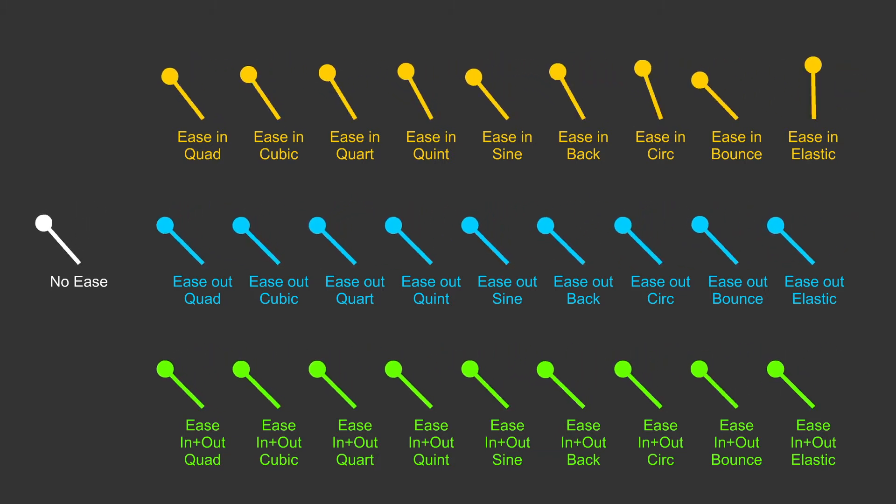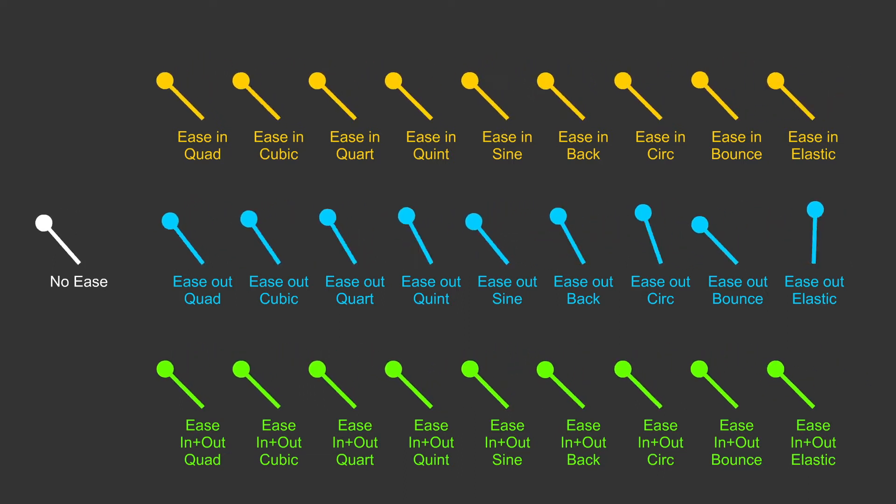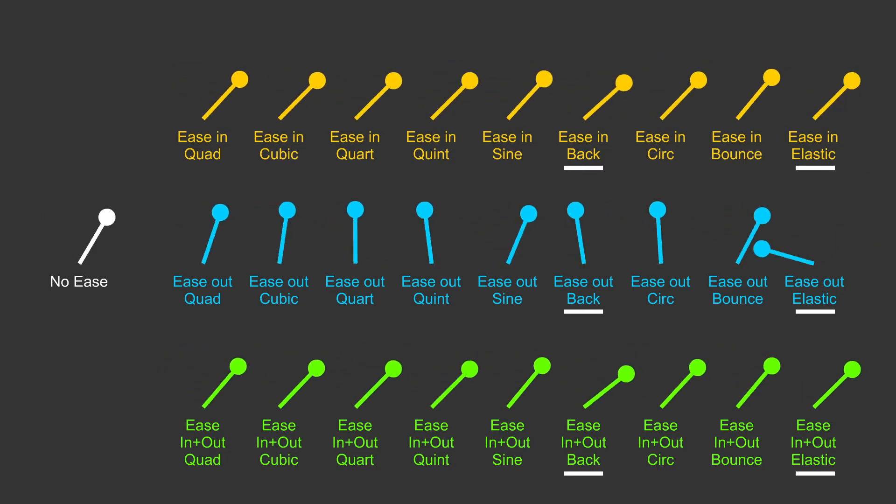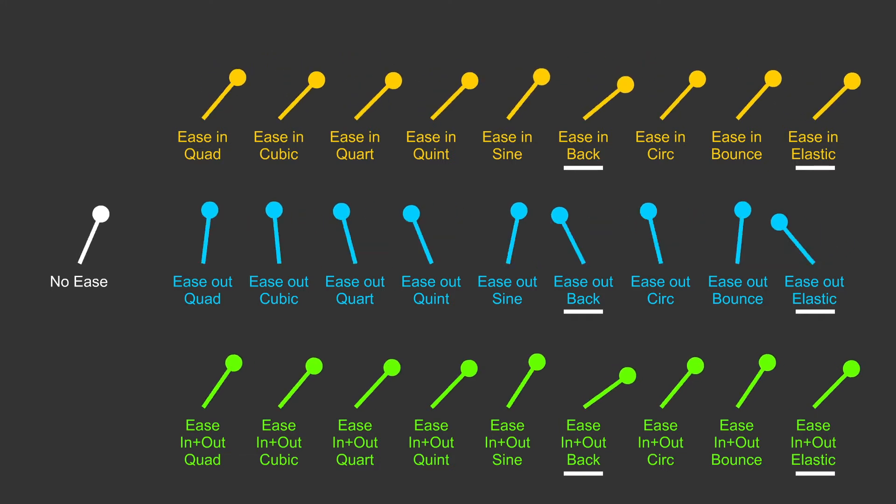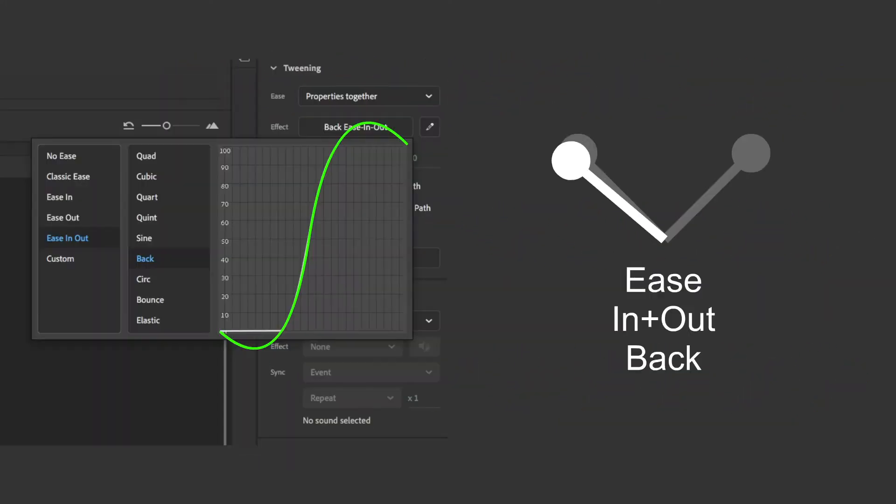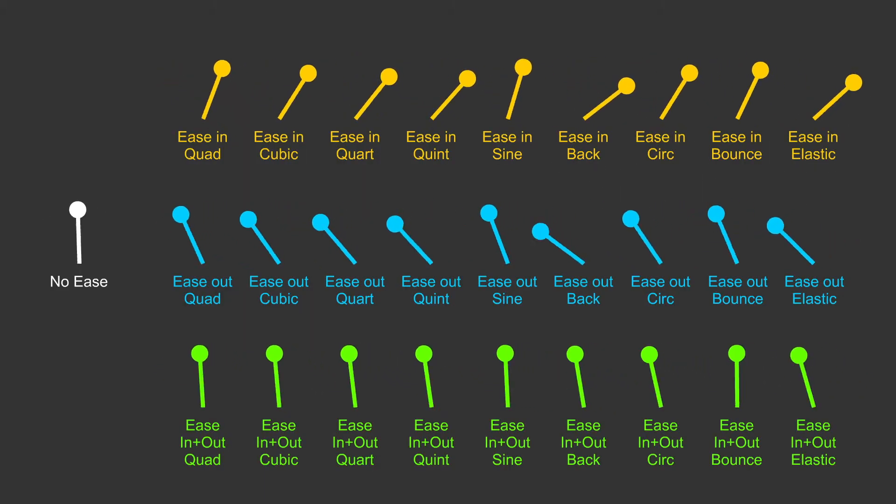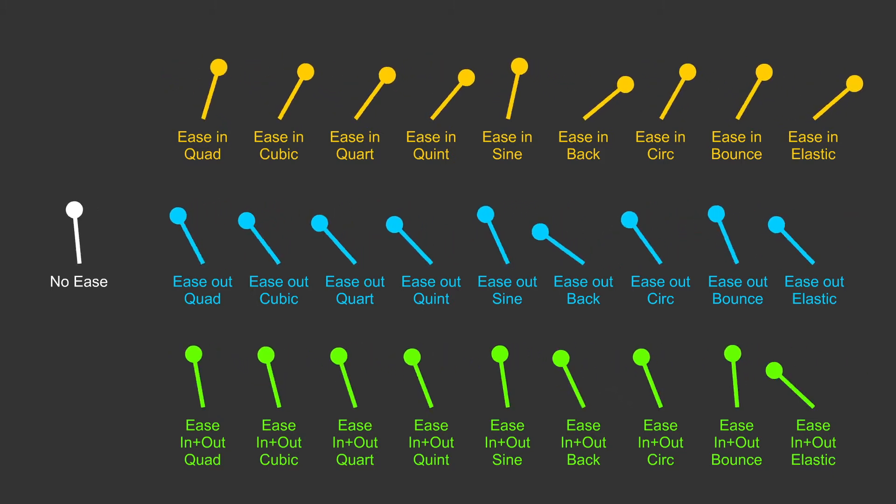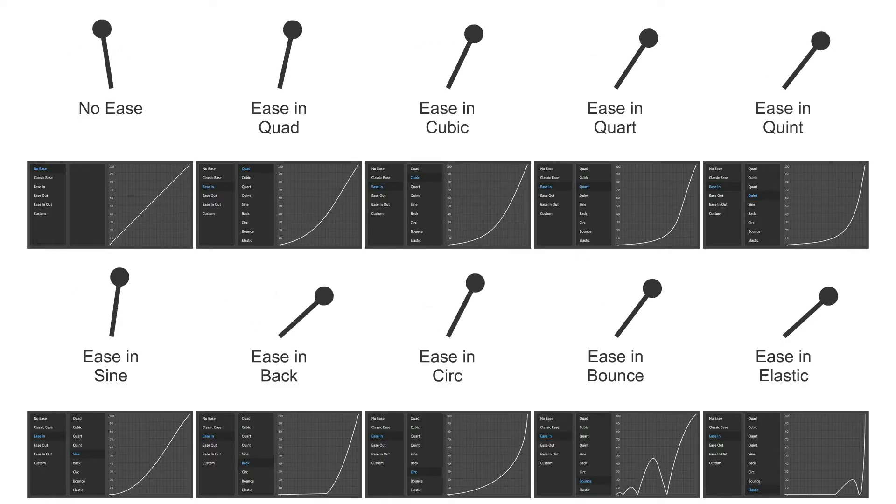Some of them you may notice actually go beyond the keyframe position, notably the Back and I think the elastic does too. So the graph editor curve is designed in a way that basically where you put your keyframe, the actual action takes it beyond that and then flings it back the other way, which can be quite a nice effect for certain things. So that's all of those side by side.